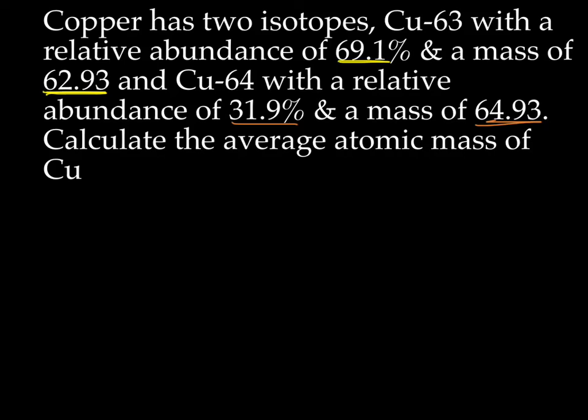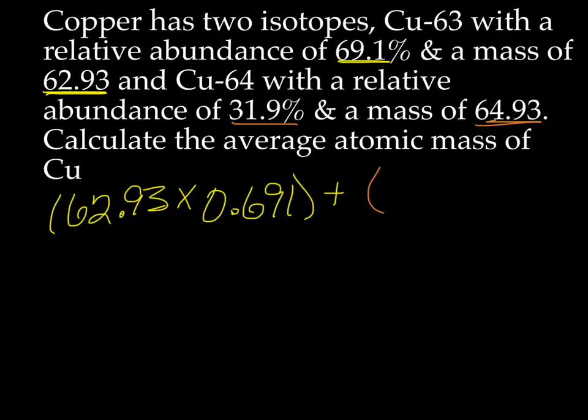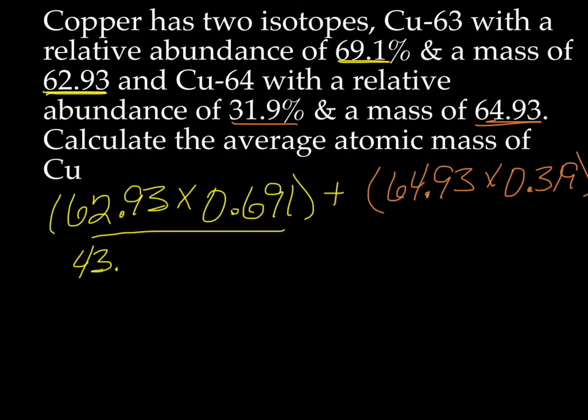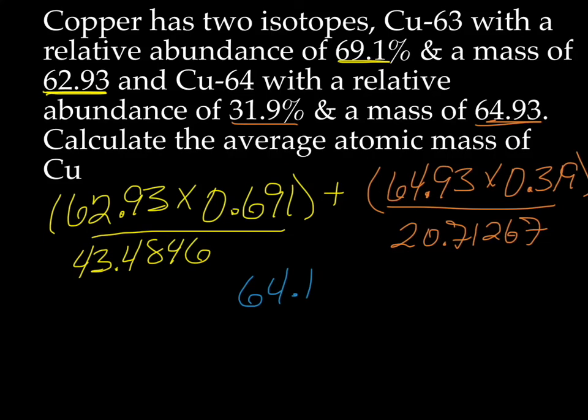Okay, so now what we're going to do is we're going to take the mass of copper 63, and multiply that by the relative abundance written as a decimal. And we'll add that to the mass of copper 64, the exact mass, and multiply that by its relative abundance written as a decimal. All right, so when I multiplied the stuff for copper 63, I got 43.4846, and when I did the multiplication for copper 64, I got 20.71267, and when I added them together, I got 64.1973.